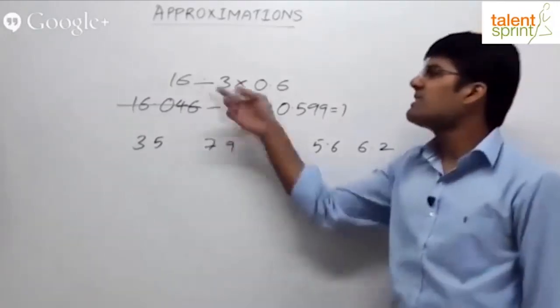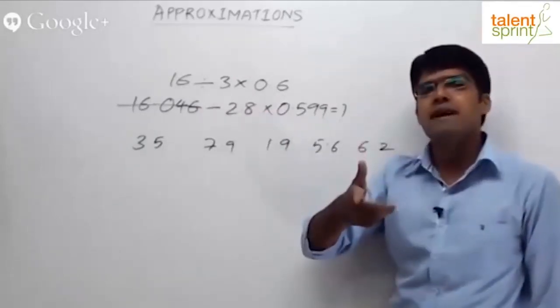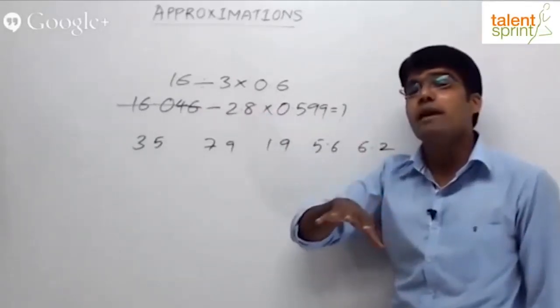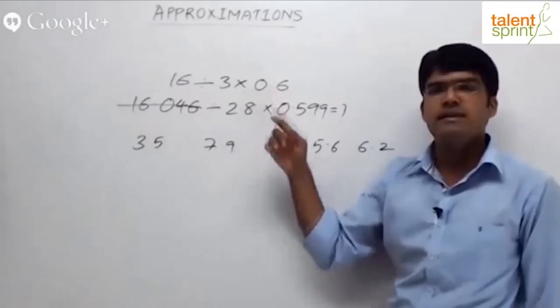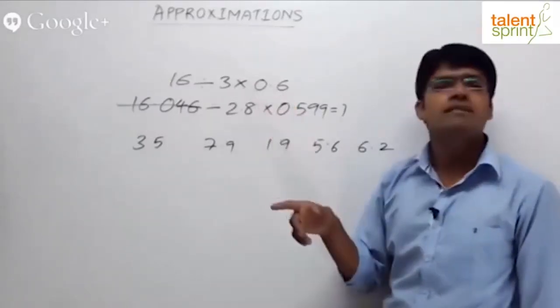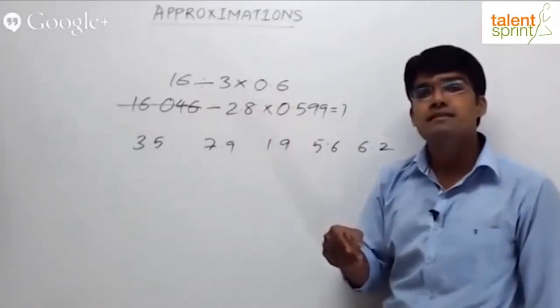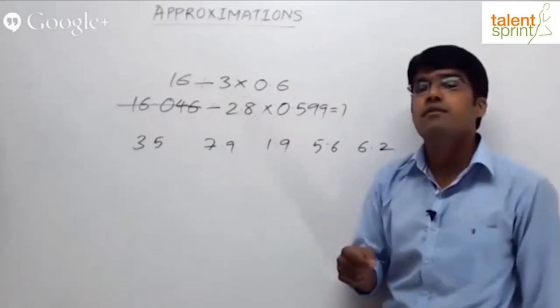So 16 by 3 will be how much? 15 by 3 is 5, 16 by 3 will be 5.33. Yes or no? 16 by 3 is 5.33. 5.33 into 0.6.